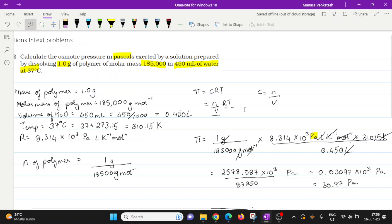And then substituted all of that into the equation π equals n divided by V into RT. And then we just basically substituted that because you'd rather do all the calculations at one place. And then we are left with the value of the osmotic pressure as 30.97 pascal.